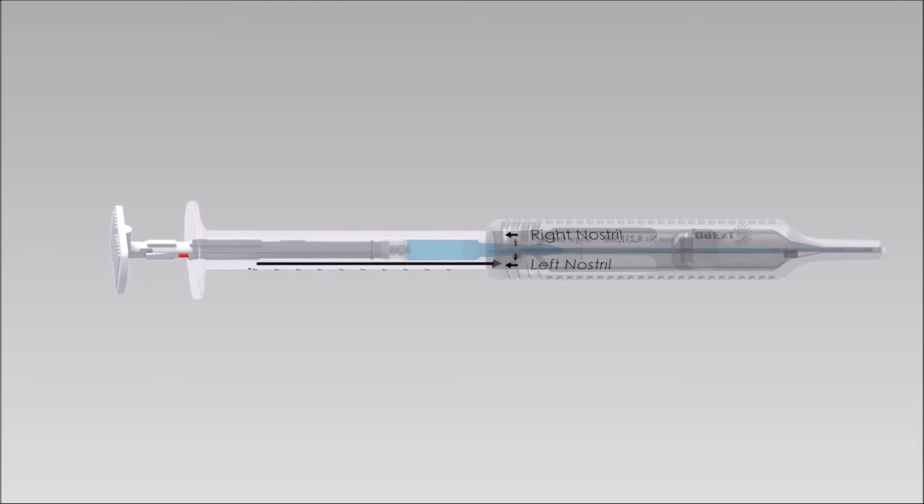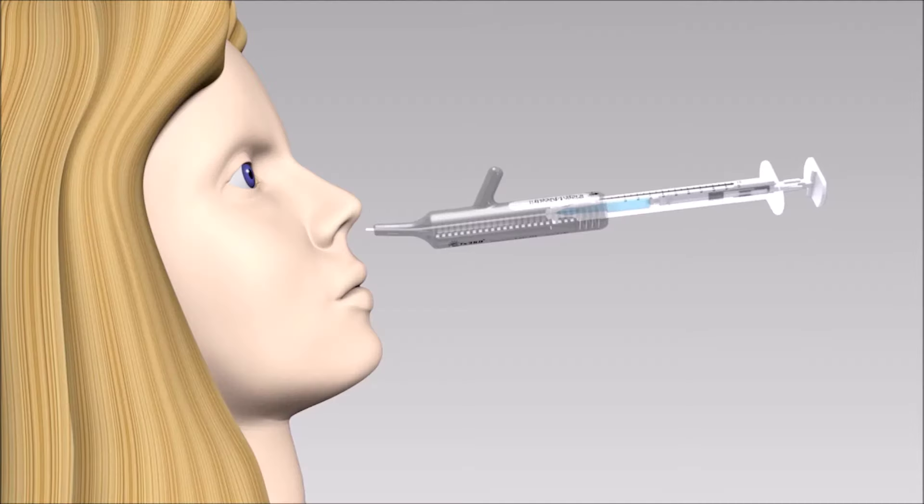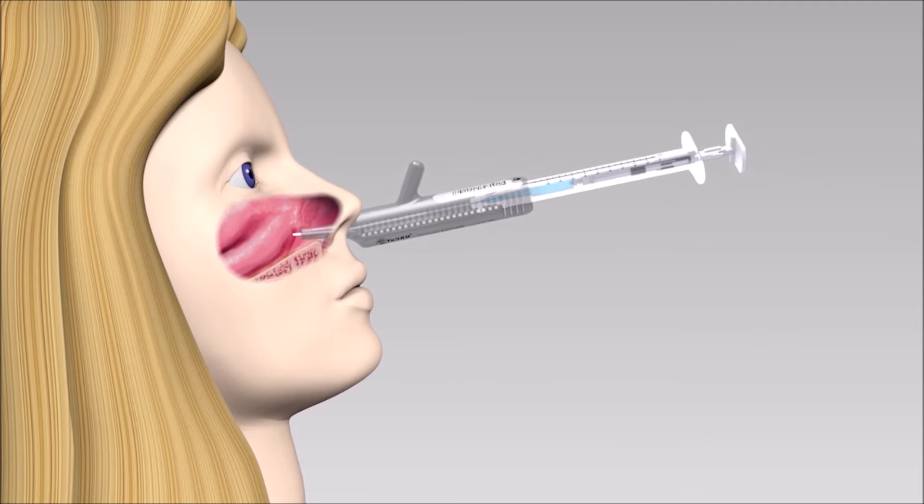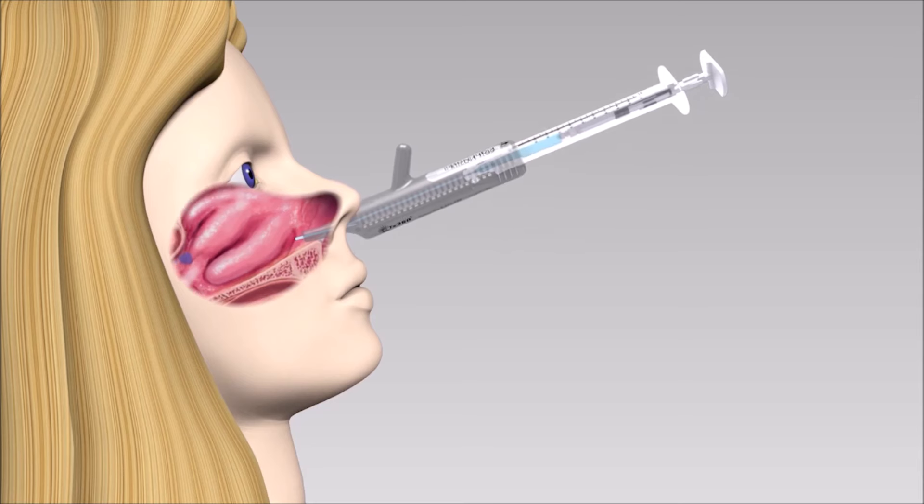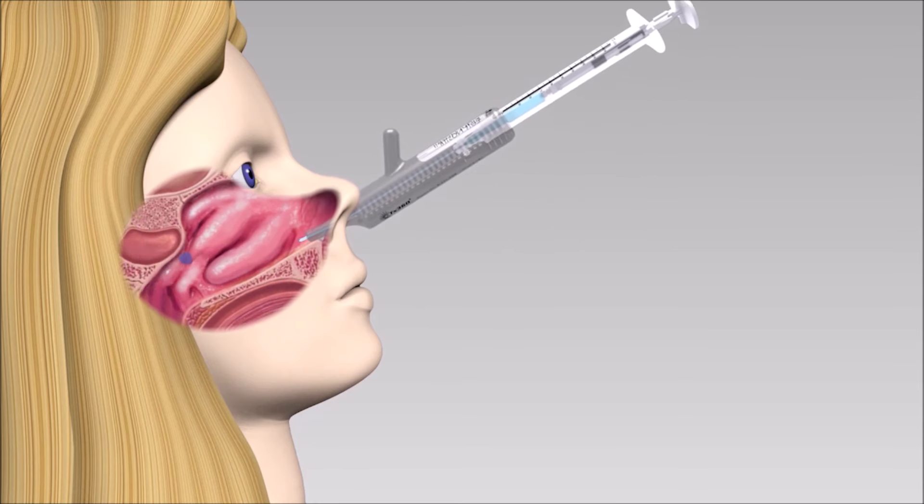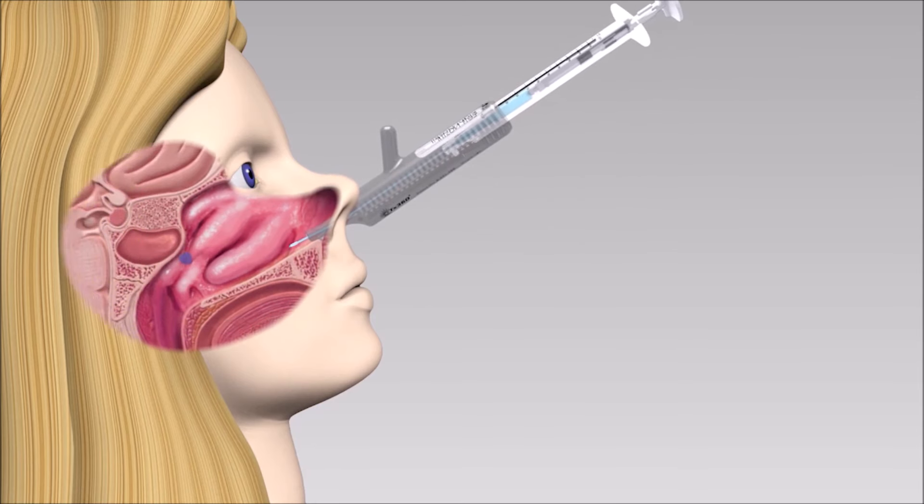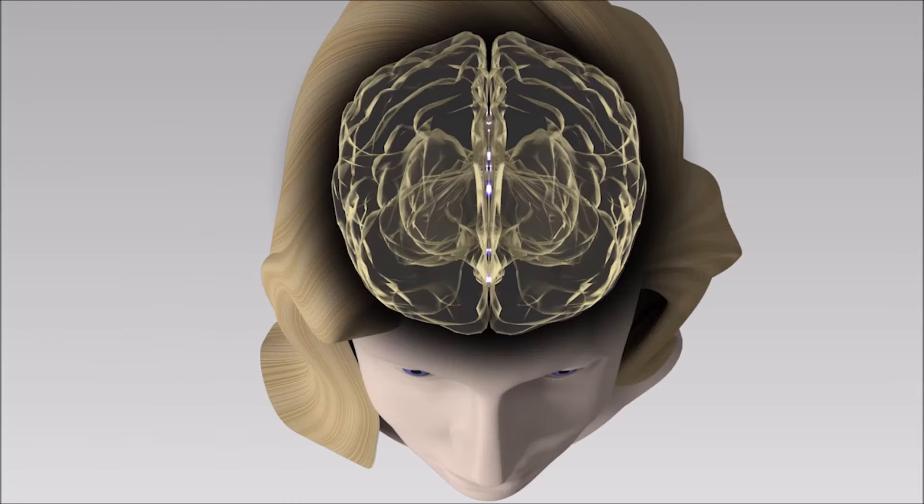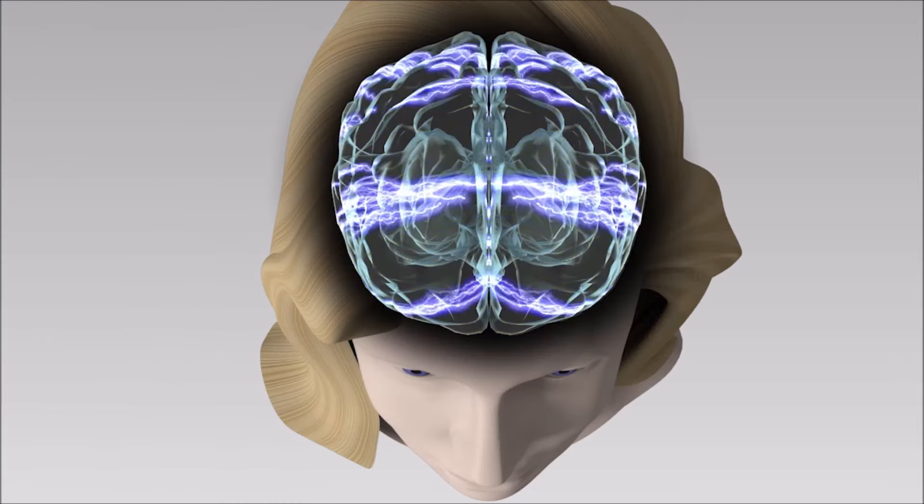realign the syringe to the left nostril track by turning the arrows in a clockwise direction and repeat the entire process on the left nostril to inject the rest of the medication or 0.3 cc towards the left sphenopalatine foramen. When all medication is emptied, you will feel a small click. This indicates complete deployment of the entire drawn medication or 0.6 cc of volume.